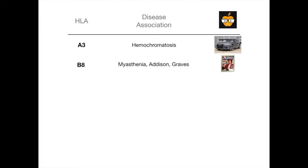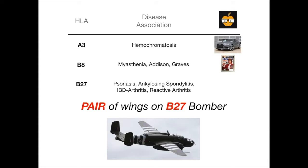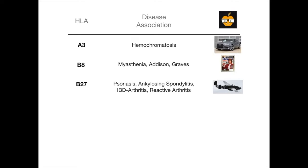HLA B27 — this is the most well-known one. It causes psoriatic arthritis, ankylosing spondylitis, inflammatory bowel disease-associated arthritis, and reactive arthritis. We take the first letters: P from psoriasis, A from ankylosing spondylitis, I from IBD-associated arthritis, and R from reactive arthritis — which spells out the word PAIR. And there's a pair of wings on the B27 bomber, an aircraft that was around for quite some time. Think about the pair of wings on the B27 bomber: that tells you HLA B27, and PAIR tells you about these four diseases. Very, very high yield. These mnemonics are awesome.